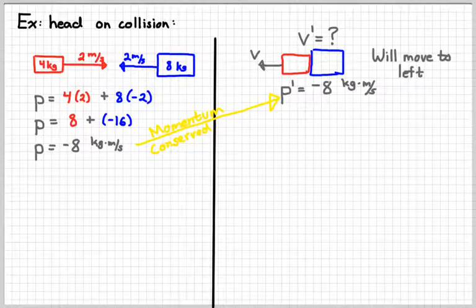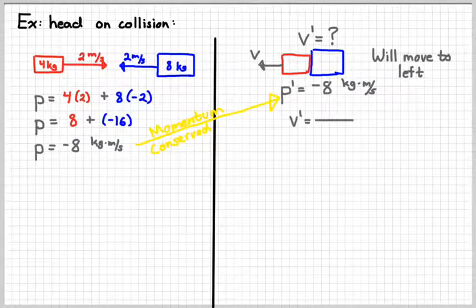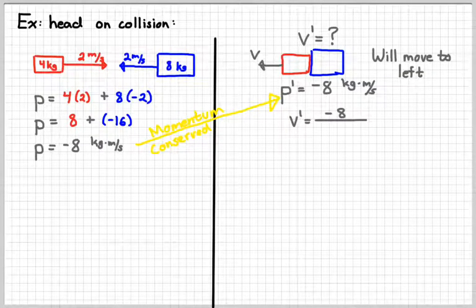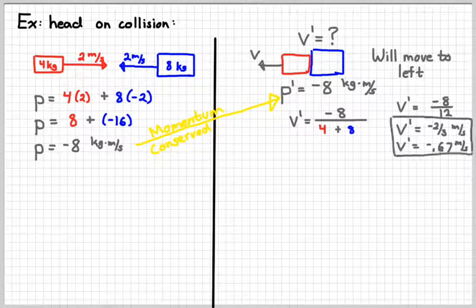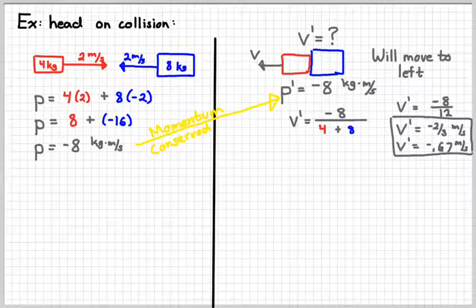We'll figure out if they move to the left, because that momentum is negative. If I take the negative eight kilogram meters per second of momentum, divide by the total mass, that'll tell me what the velocity of the two is after the collision.